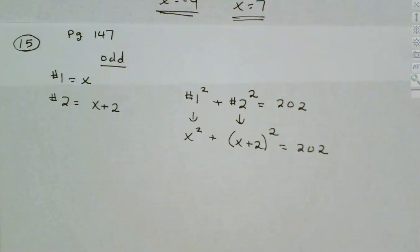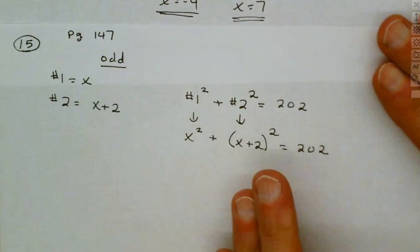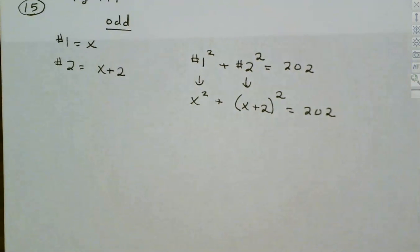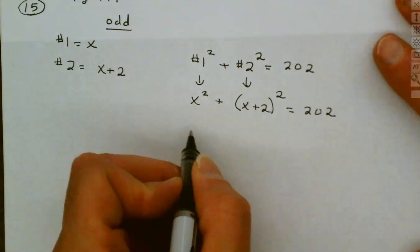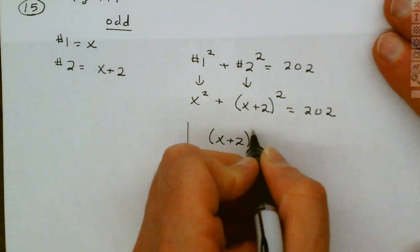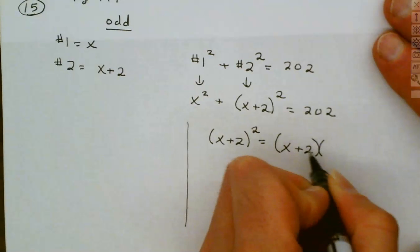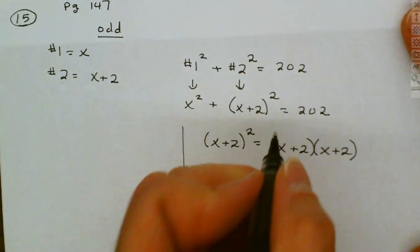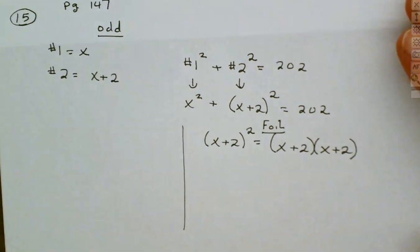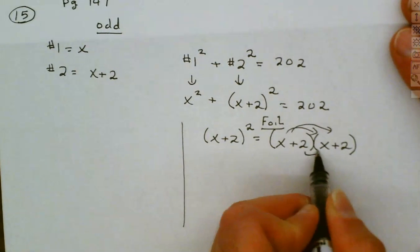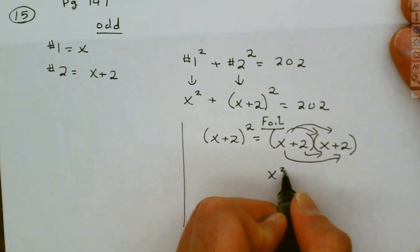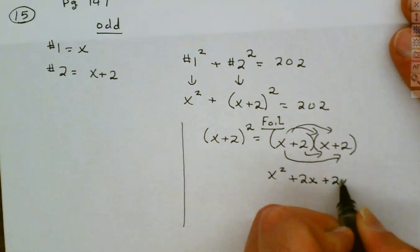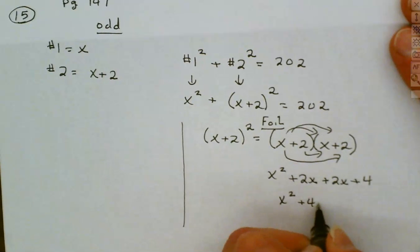We can't use a square root property because we've got two squares. We need to set it to zero. So I'm going to take that x plus 2 quantity squared and FOIL it out. That gives x squared plus 2x plus 2x plus 4, which is x squared plus 4x plus 4. That equals 202. I just FOILed it out separately and then put it back in.